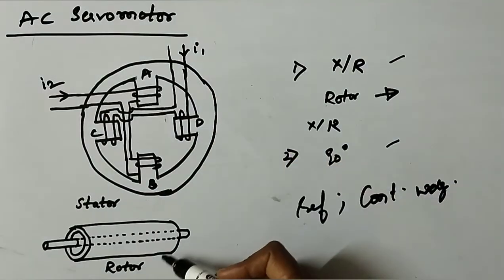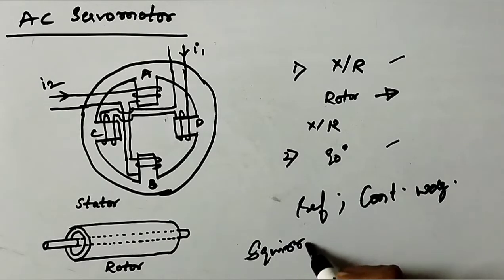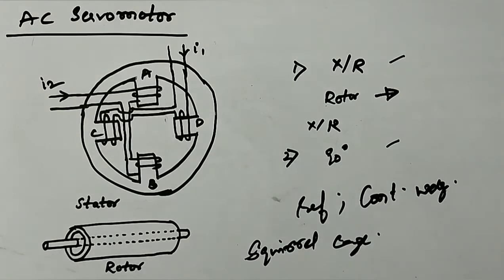The rotor construction is usually squirrel cage and the cage rotor is made of laminations.